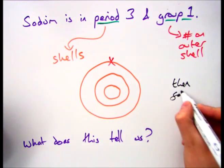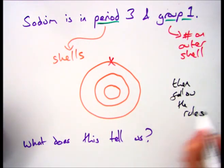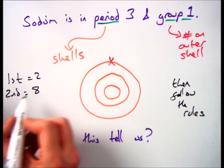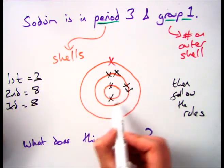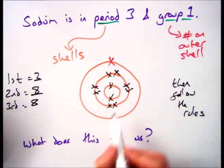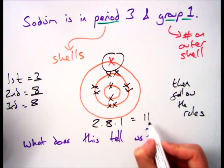Then all you have to do is follow the normal rules knowing that you have 2 in the first shell, 8 in the second shell and 8 in the third. So we put 2 in our first, 8 in our second and then I've already got my outer shell because I've been told that by the question.